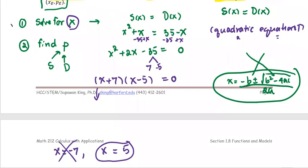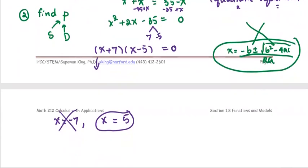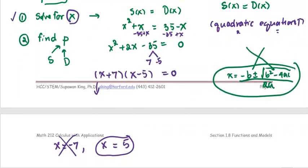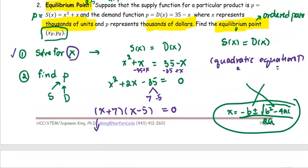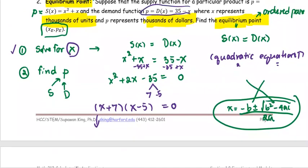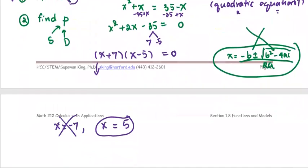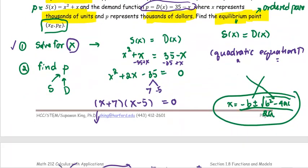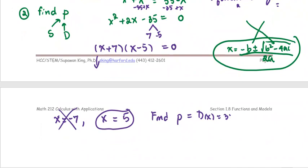Step one is done. Next, we're going to find p, or the price. You can pick either the demand or supply function, whatever's easier. I'm going to go with the demand function because I don't have to square the number. So p = D(x) = 35 - x, and p_e = 35 - 5 = 30.